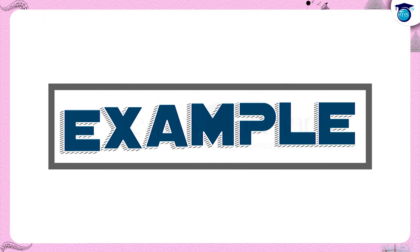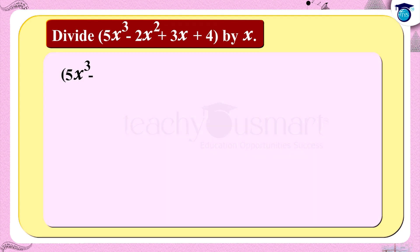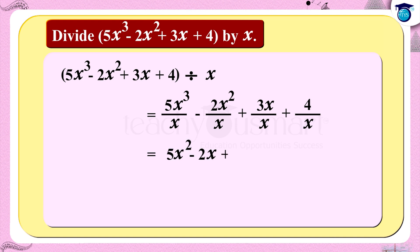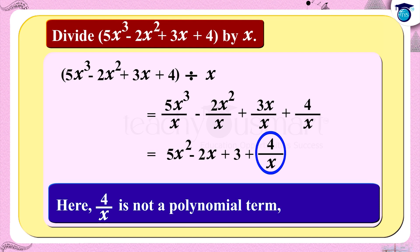Let's take another example. Divide 5x³ - 2x² + 3x + 4 by x. Dividing each term by x, we get 5x² - 2x + 3 + 4/x. Here, 4/x is not a polynomial term, since 4/x can be written as 4·x⁻¹, and in a polynomial the exponent of a variable must be a non-negative integer. So in this case we can write 4 as the remainder.